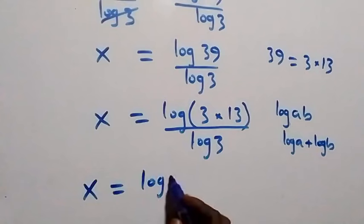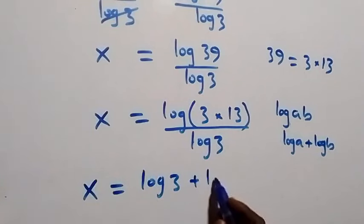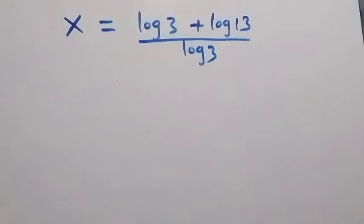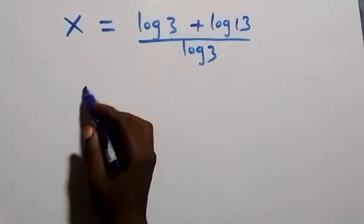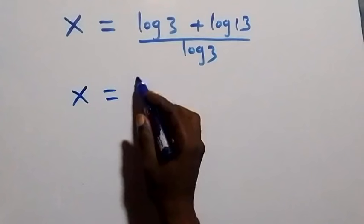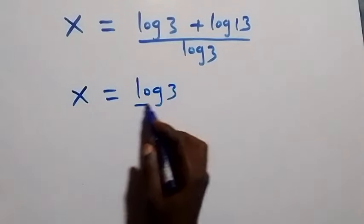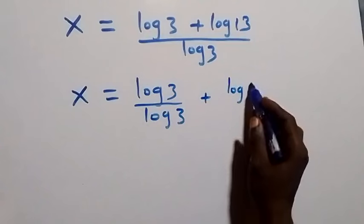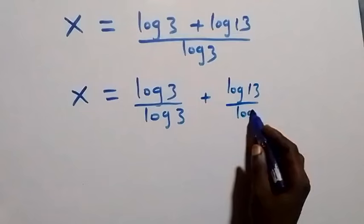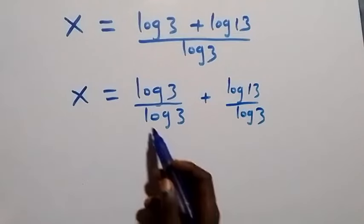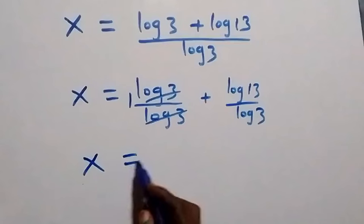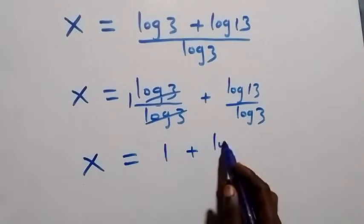That is, from here we can separate this fraction. This gives us x equals to log three over log three, plus log thirteen over log three. From here, log three cancels with log three giving us one, so we have x equals to one plus log thirteen over log three.